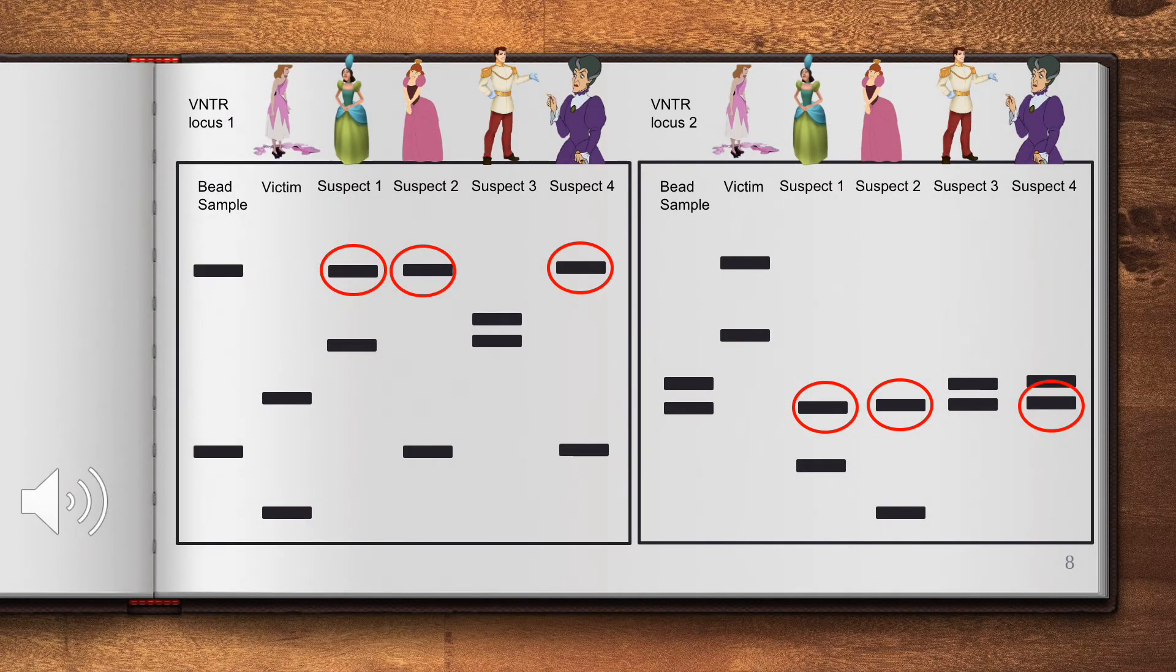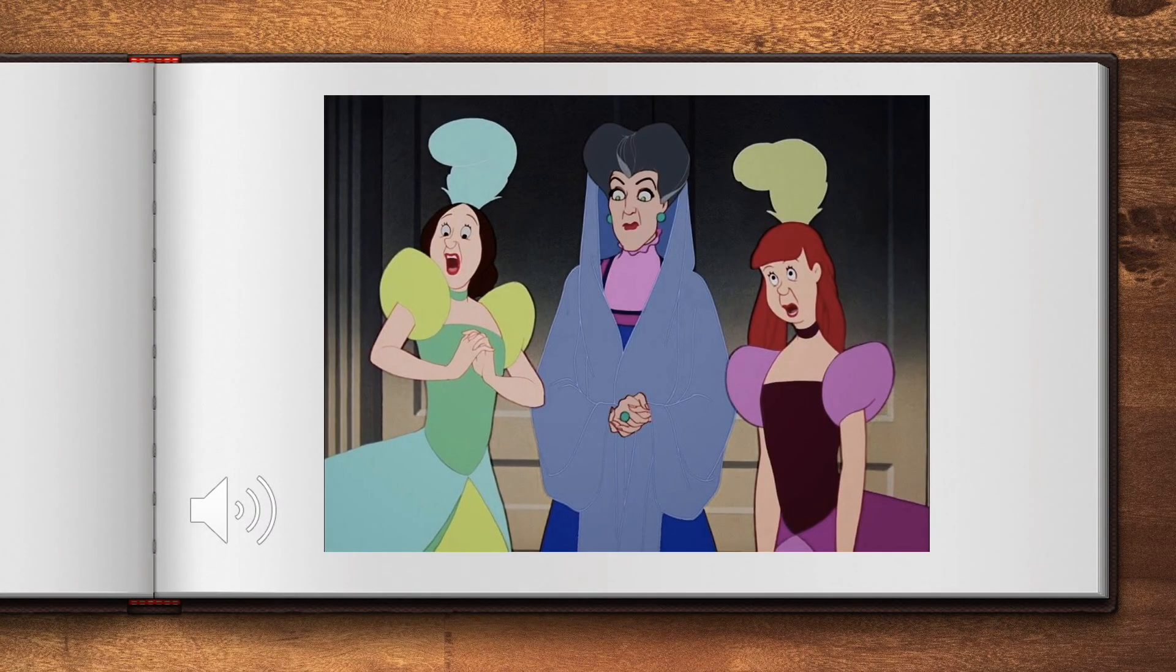Additionally, the fairy godmother knows that the evil stepmother is the biological mother of the evil sisters by looking at their DNA samples. The two sisters and the mother have at least one band that is the same at both loci. The fairy godmother named the sisters guilty by association and doesn't allow them to go to the ball either.